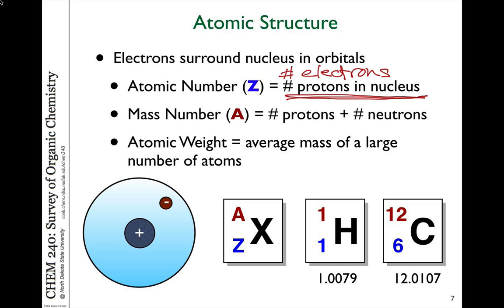The mass number on the periodic table, which we signify by A, is the total mass — roughly the mass in whole numbers of the atom. For example, hydrogen has a mass number of one and an atomic number of one. So that means there's one proton, and one minus zero equals one neutron count, meaning there are zero neutrons in hydrogen. So the mass is one.